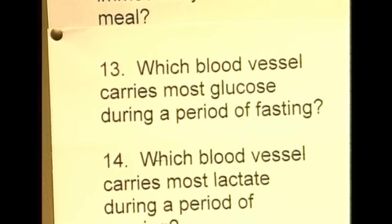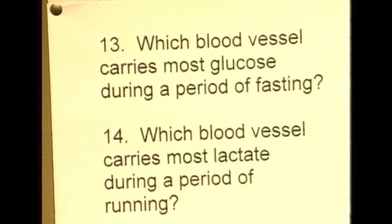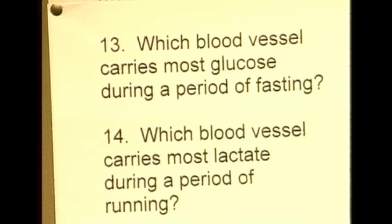The last question: which blood vessel carries most lactate during a period of running? During vigorous exercise there can be some anaerobic metabolism in the muscles, causing the generation of lactic acid. This will be drained from the anaerobically metabolizing muscle in the vein draining that muscle. The example used for the blood vessel draining the legs is the femoral vein, so the femoral vein carries most lactic acid during a period of running.